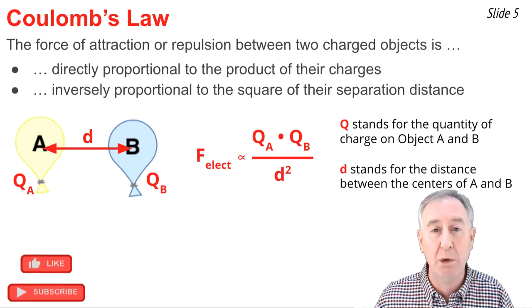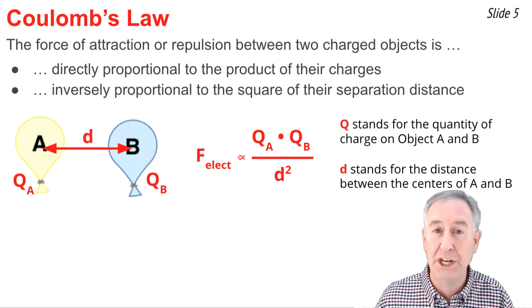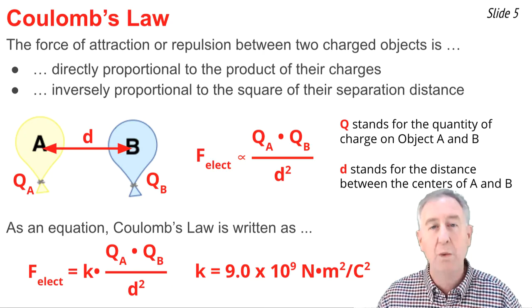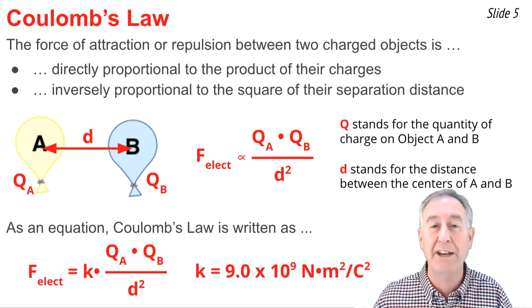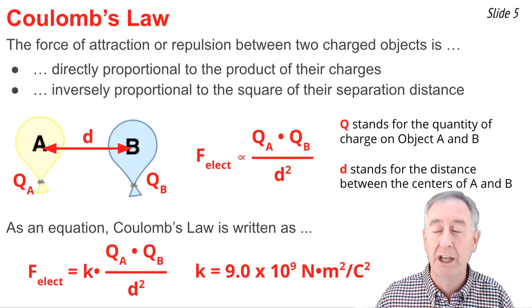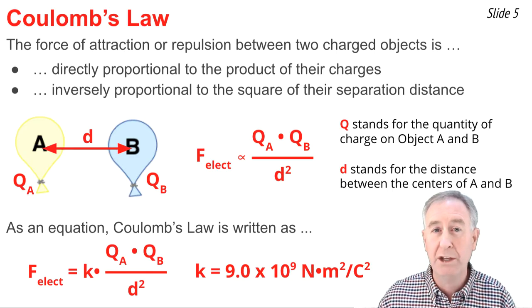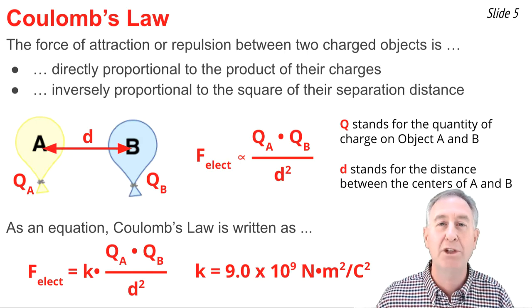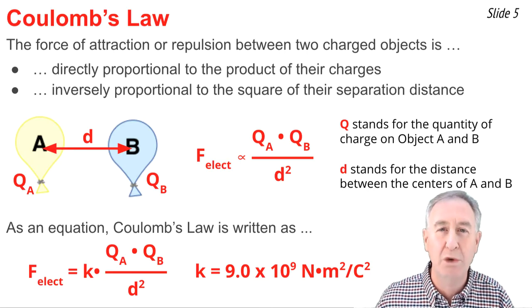If I wish to express this by an equation, I need to use a proportionality constant, K. It can be written like this, where K is sometimes referred to as the Coulomb's law constant. Its value is 9.0 times 10 to the 9th newtons times meters squared per coulomb squared. Because of these units, when I use this K value to solve for electric force, I have to use Q in units of coulombs and D in units of meters.